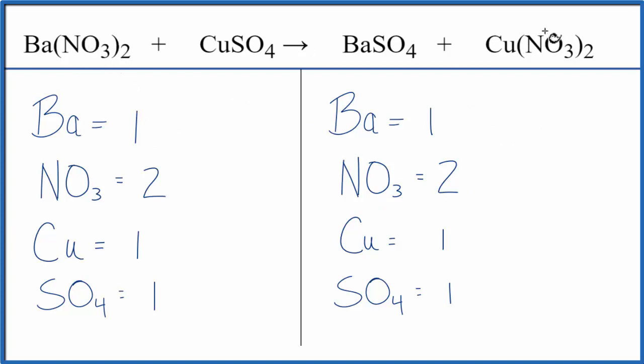By counting these polyatomic ions as just one item when they appear on both sides, that really simplifies adding up all the atoms, makes it go a lot quicker, and you're less likely to make mistakes. This is Dr. B with the balanced equation for Ba(NO3)2 plus CuSO4. Thanks for watching.